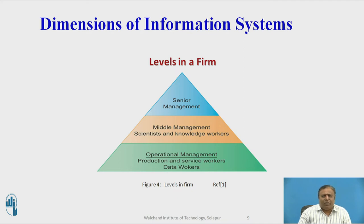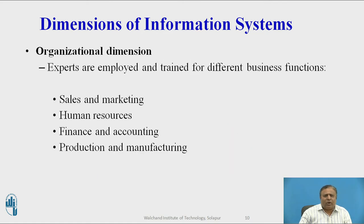In an organization, information systems are an integral part. The key elements of an organization are people, structure, business processes, politics, and culture. These include: sales and marketing — selling the organization's products and services; manufacturing and production — producing and delivering products and services; finance and accounting — managing financial assets and maintaining financial records; and human resources — attracting, developing, and maintaining the organization's labor force and employee records.